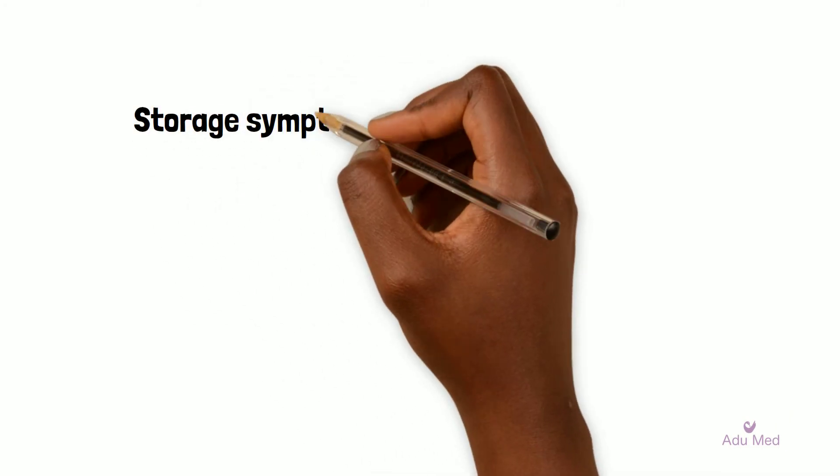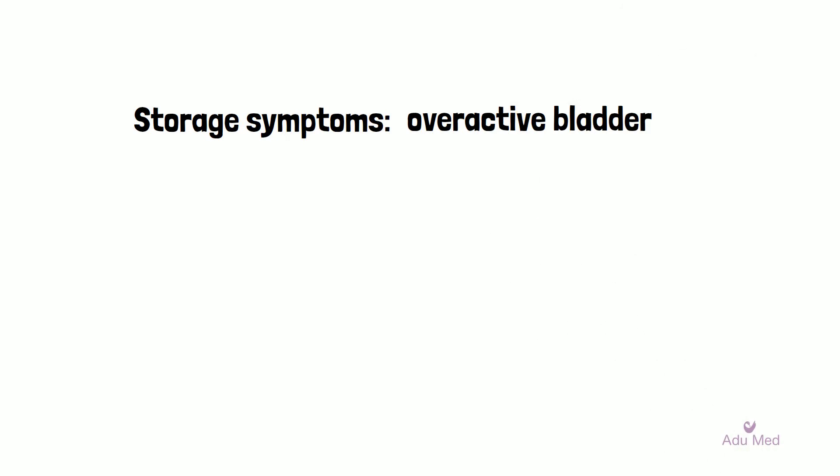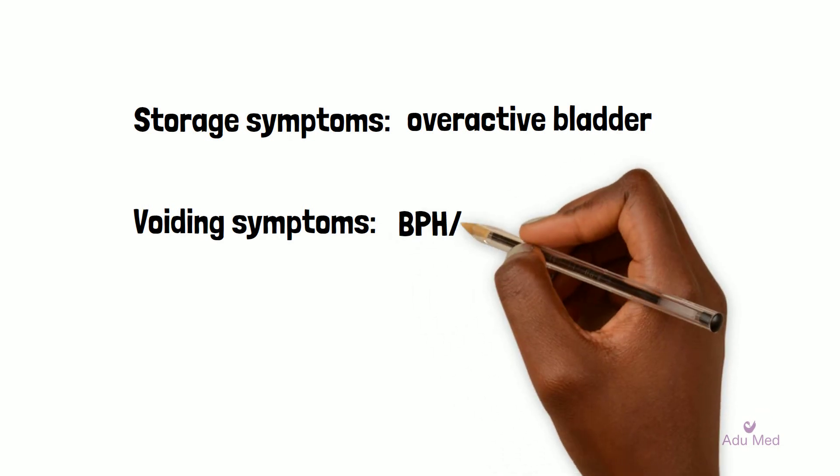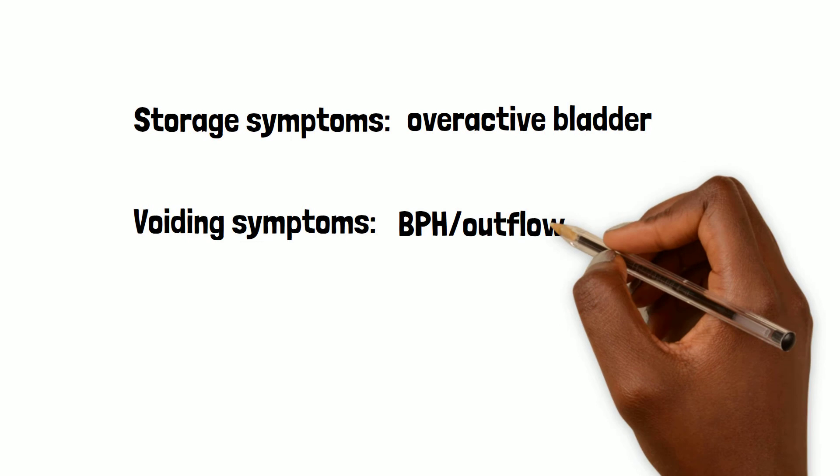Lower urinary tract symptoms can be classified as the following. Storage symptoms such as increased urinary frequency, nocturia and urge incontinence — these symptoms usually point to an overactive bladder. Voiding symptoms such as hesitancy, straining and poor stream — these symptoms suggest BPH or outflow obstruction.